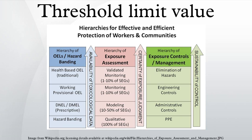The TLV for chemical substances is defined as a concentration in air, typically for inhalation or skin exposure. Its units are in parts per million for gases and in milligrams per cubic meter for particulates such as dust, smoke, and mist.